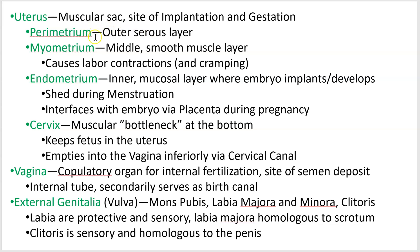Moving on to the uterus — it's a large, muscular sac with several layers. It has a perimetrium around the outside, a myometrium which is the smooth muscle layer, and if you experience menstrual cramps, that is because the myometrium is contracting trying to get rid of the endometrium, which is the inner lining. If you're female, you build up the endometrium every month, and if you don't get pregnant, you shed it.